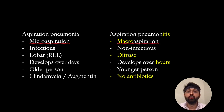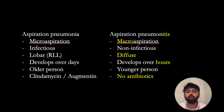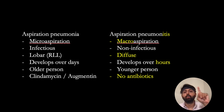Pneumonitis, on the other hand, is a macro aspiration caused by large amounts of gastric acid — I'm thinking over half a liter — entering the lungs. It's a direct chemical injury, not an infectious process. Unlike the lobar pneumonia seen in aspiration pneumonia, this causes a diffuse lung injury, with infiltrates in both lungs.